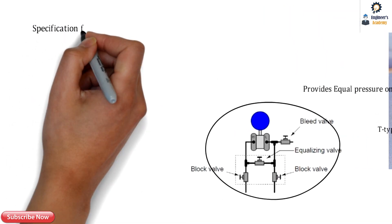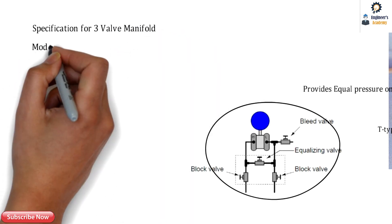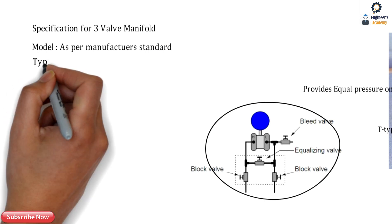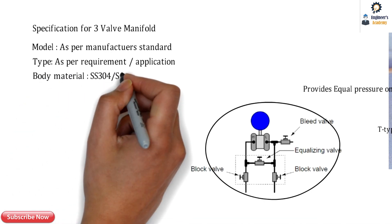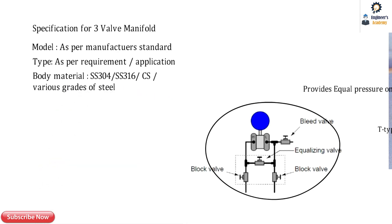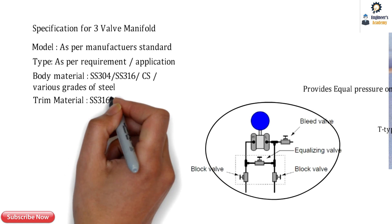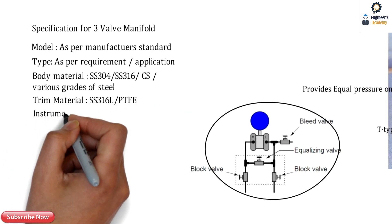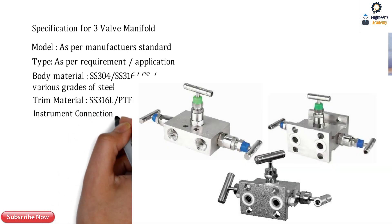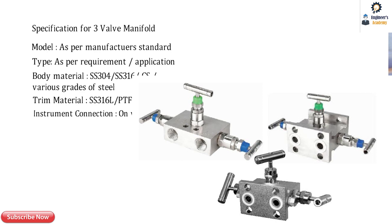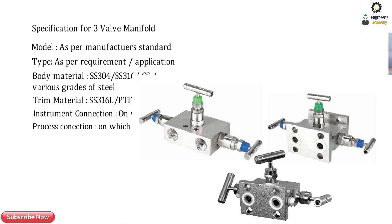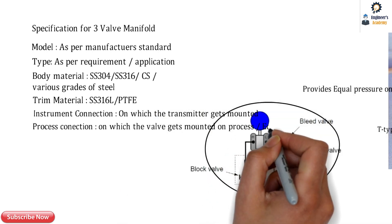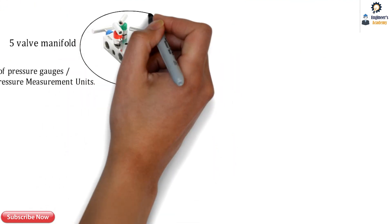For three-way manifold specifications: the model is as per manufacturer standard, and the type varies per requirement and application. The body material is SS 304, SS 316, carbon steel, or various other grades of steel. The trim material can be SS 316L or PTFE. The instrument connection can be flange type or threaded, depending on requirement. The process connection also varies depending on which equipment the manifold valve is being mounted on.